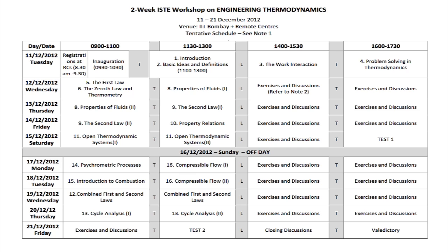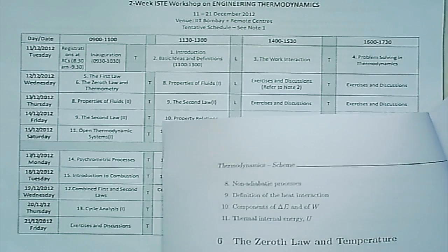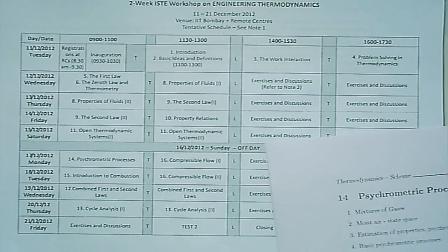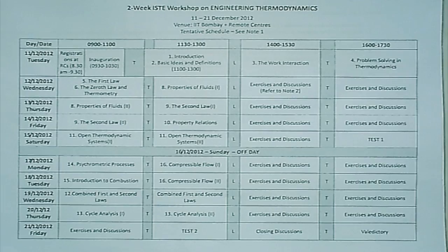The second document — you may have either a paper or an electronic version — is what I call the sequence of topics. This is more of a checklist than anything else. For every item — 1, 2, 3, 4 and so on — we have an expanded version with subtopics. There are in all 16 topics, all listed in this document. This acts as a checklist for me, for us, and also for you.